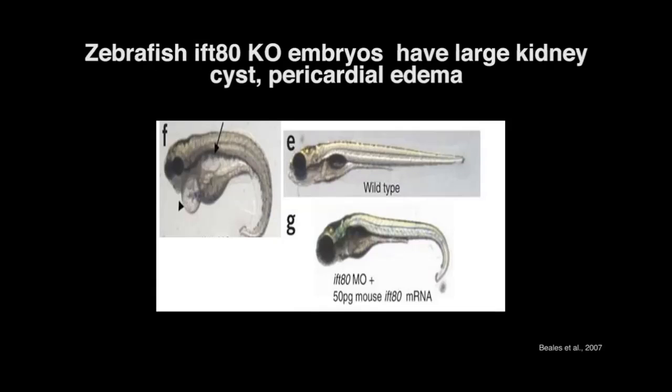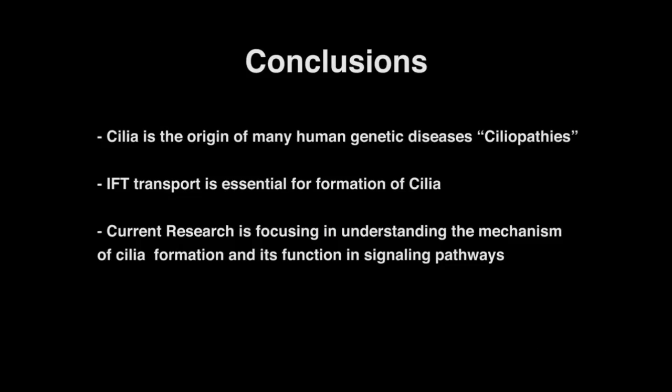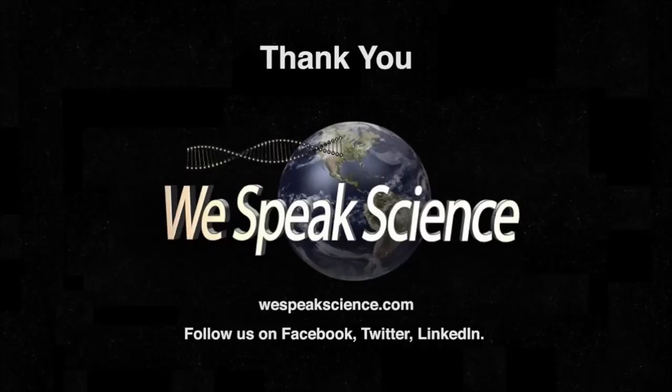In conclusion, cilia is the origin of many human genetic diseases, collectively known as ciliopathies. IFT transport is essential for formation of cilia. Current research is focusing on understanding the mechanism of cilia formation and its function in signaling pathways. Thank you very much. We speak science.